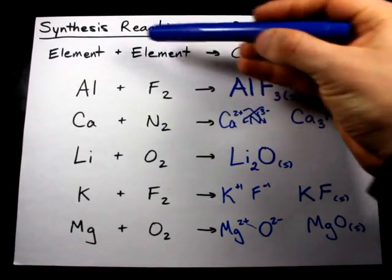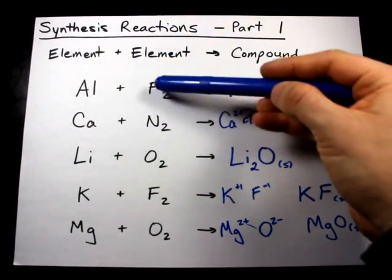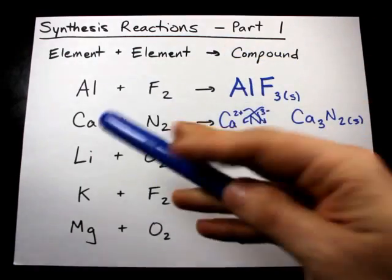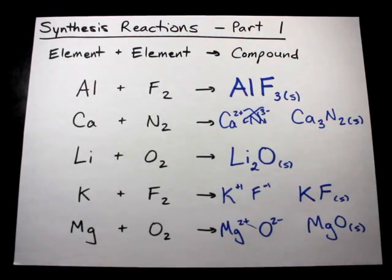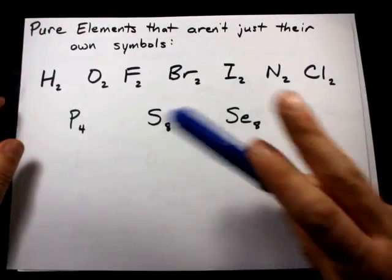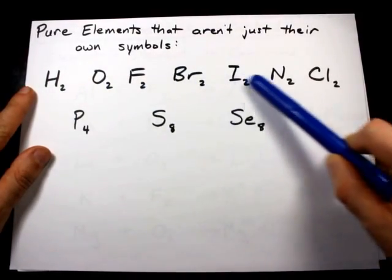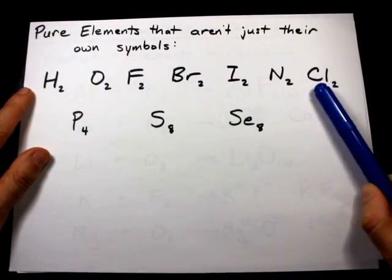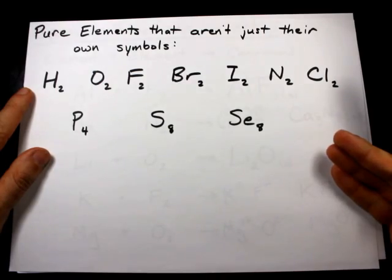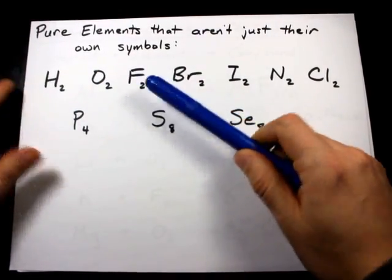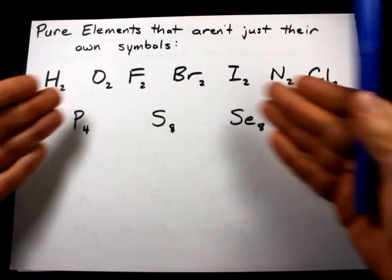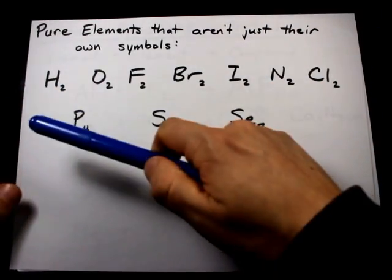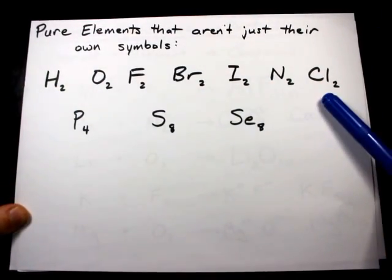Now, you in synthesis reactions will see pure element symbols here, and I just don't want you to get freaked out by some of them. All of the elements in this row that I've listed for you, and it spells Hofbrinkel, if your teacher taught it to you that way, have a little 2 underneath. That's simply because the pure elemental form of those elements is a diatomic molecule.